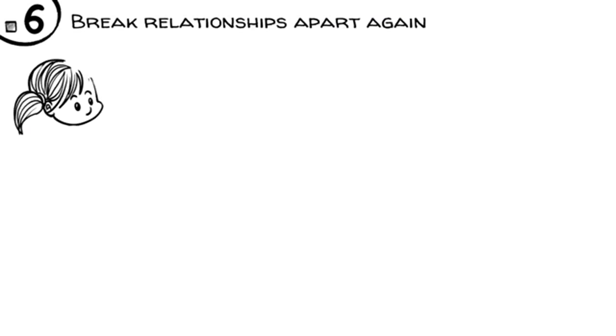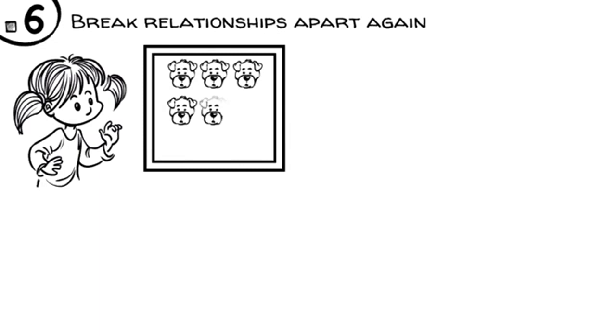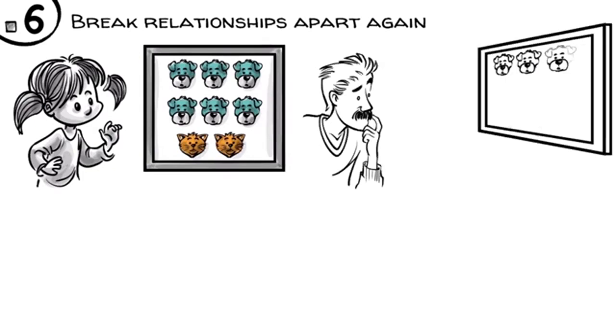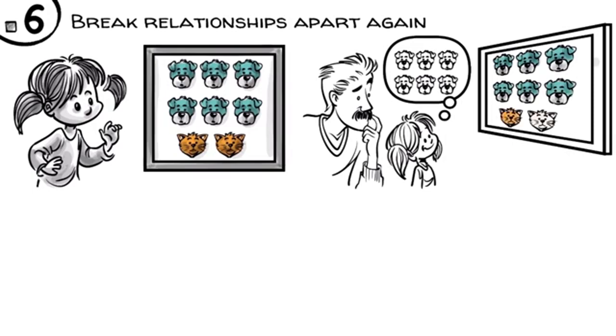After building them, children need to learn to break relationships apart again. We can see how hard this is when we present a five-year-old an image of six dogs and two cats and then ask, are there more dogs or more animals? While most adults who see the full picture find this question odd, a five-year-old typically just answers, more dogs. When you ask further, more dogs than what? The child replies, then cats.